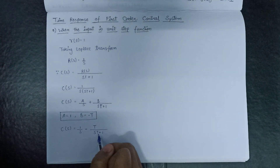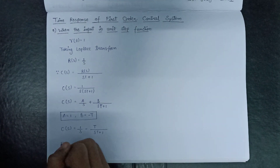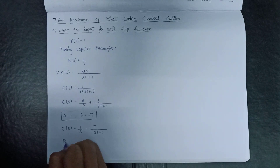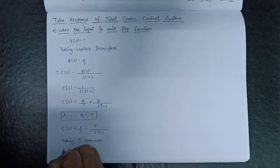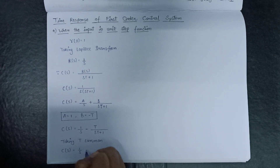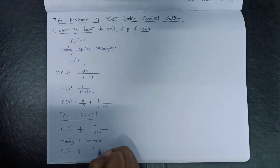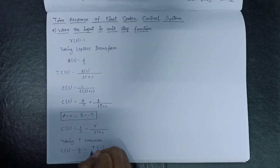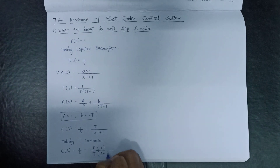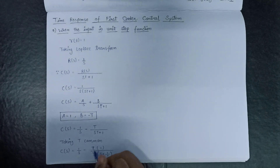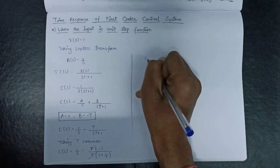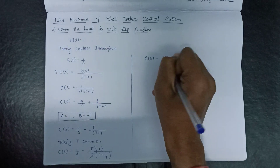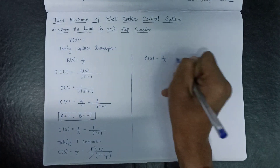We can take T as a common term from both the numerator and the denominator. Taking T as a common term, we get C(s) equals 1/s minus T times 1 over T(s + 1/T). This T will cancel out, and we get C(s) equals 1/s minus 1 over (s + 1/T).